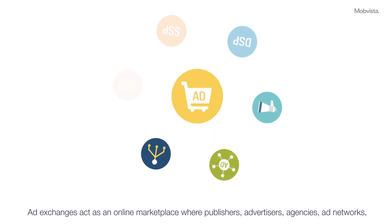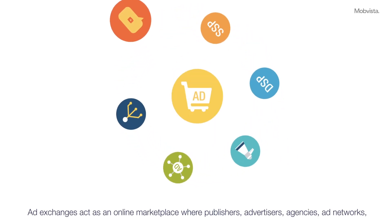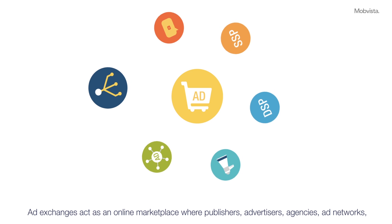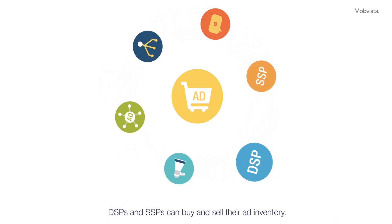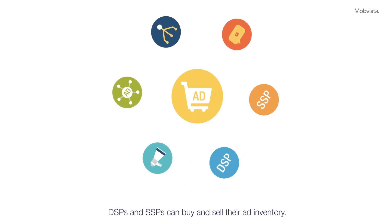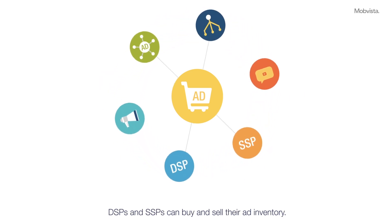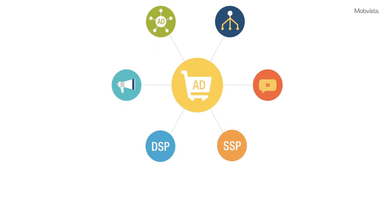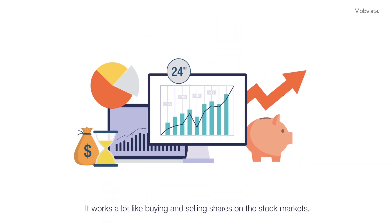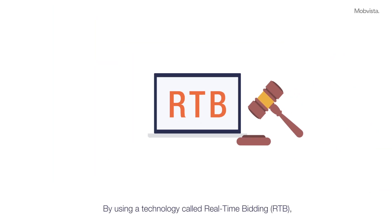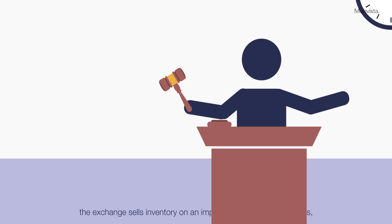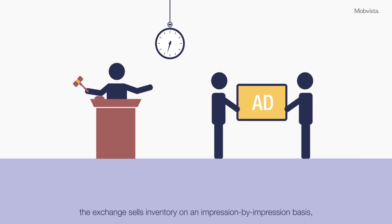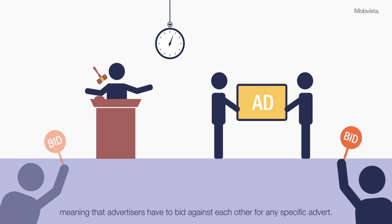Ad exchanges act as an online marketplace, where publishers, advertisers, agencies, ad networks, DSPs, and SSPs can buy and sell their ad inventory. It works a lot like buying and selling shares on the stock market. By using a technology called real-time bidding, the exchange sells inventory on an impression-by-impression basis, meaning that advertisers have to bid against each other for any specific advert.